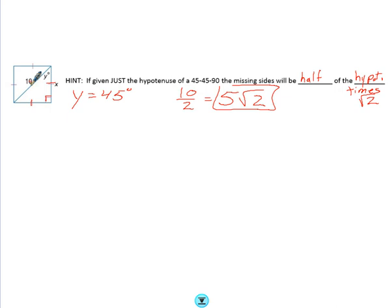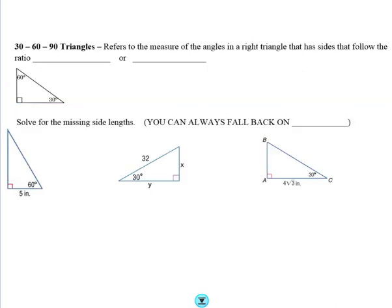The answer to x here would be 5 square root of 2. If I told you that was equal to 22, I would say 22 divided by 2 is 11, and this would be 11 square root of 2. Half the hypotenuse times the square root of 2. Just a little trick for you.